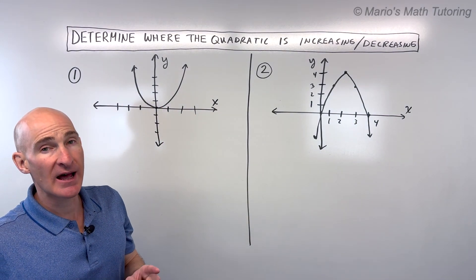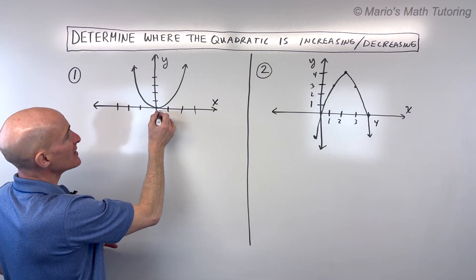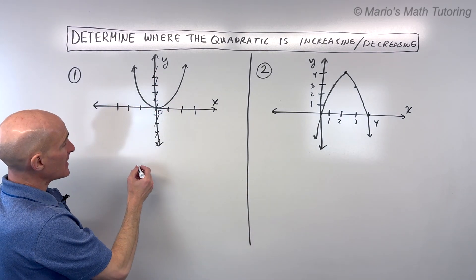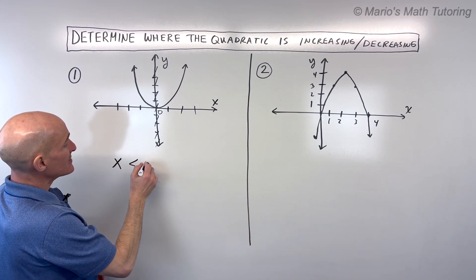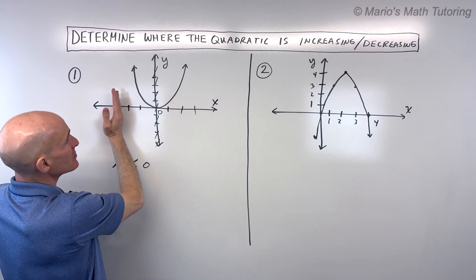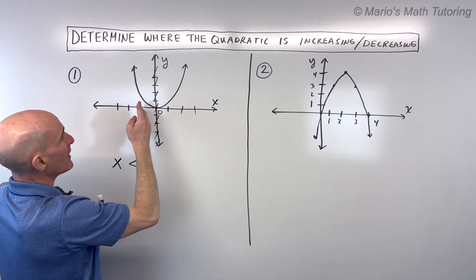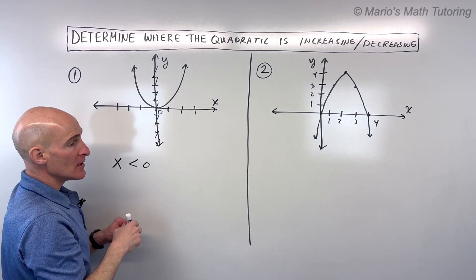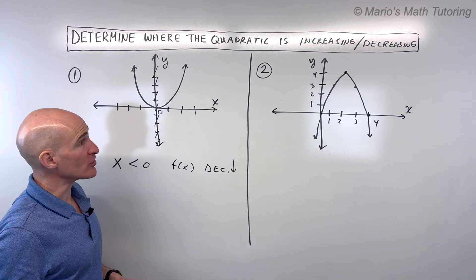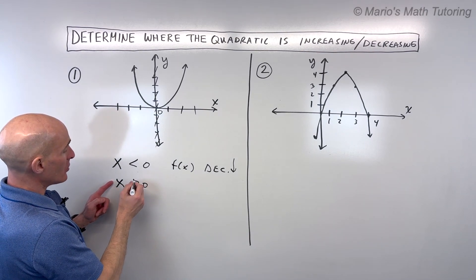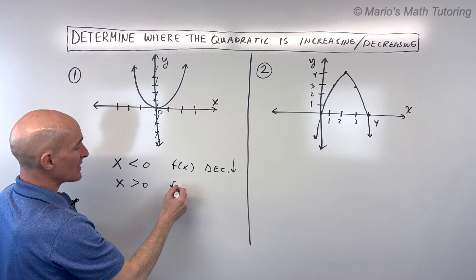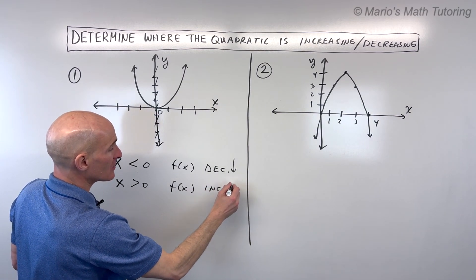A key thing to focus on is where is that vertex. This vertex right here is at x equals 0 — that's going to be like our dividing line. This is called the axis of symmetry. So when x is less than 0, meaning when we're to the left of 0, the y-values, as they go from left to right, are decreasing — f of x is decreasing. Now as x is greater than 0, meaning as we're going to the right, the y-values are increasing, so the function f of x is increasing.